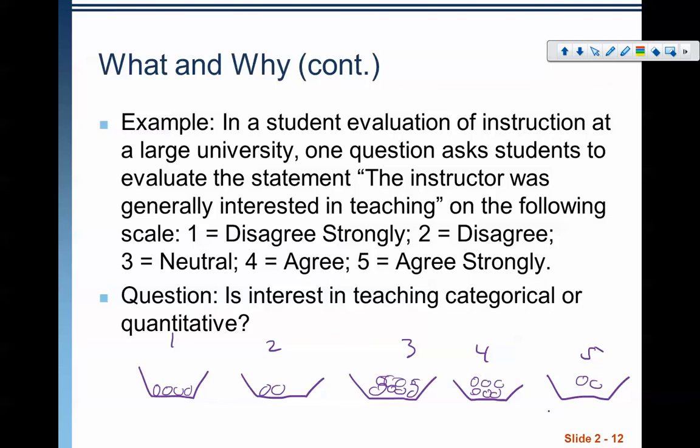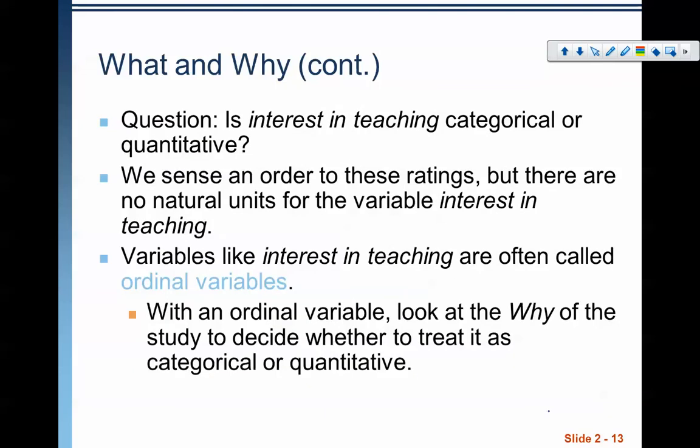The answer could be something for both. There's an order to these ratings, but there's no natural units. Variables like this that could be quantitative or categorical we sometimes call ordinal variables. Now this is not a terribly important vocabulary word that you should know. However, an ordinal variable can be categorical or quantitative, and we need to look at the why in order to decide what exactly it is.